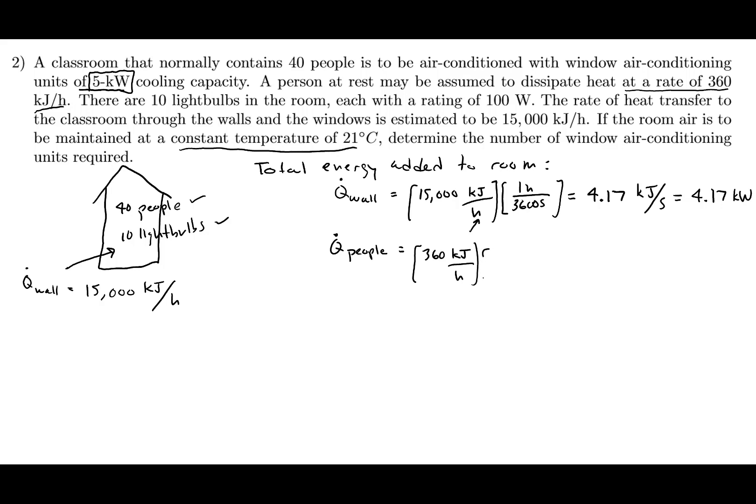I'm going to convert that hour to seconds, so one hour over 3600 seconds. And then I have 40 people, so I'm going to multiply this by 40. This works out to 4 kilojoules per second, which is 4 kilowatts.